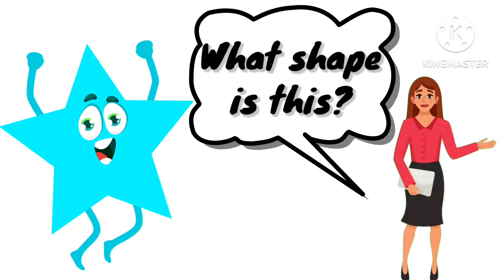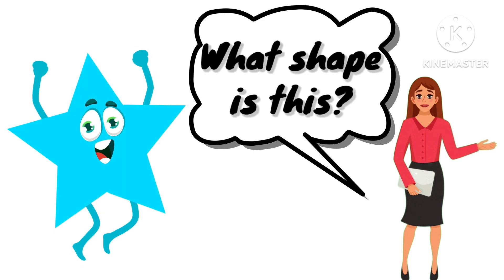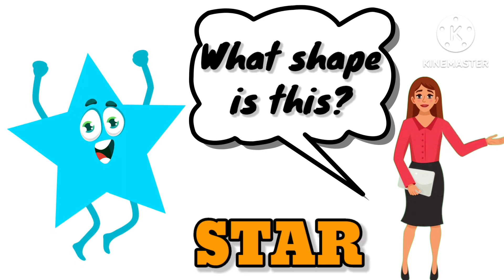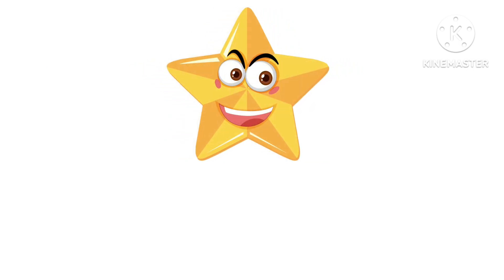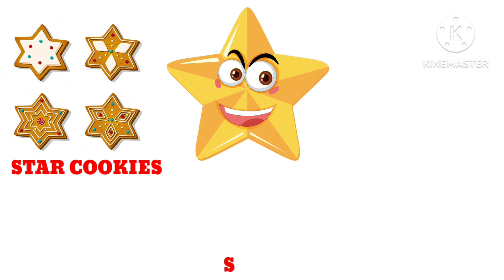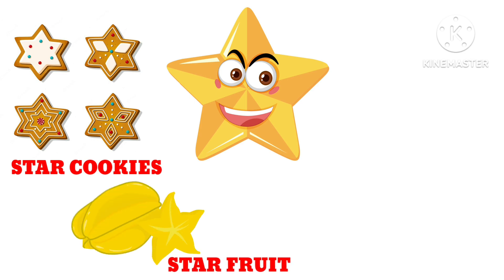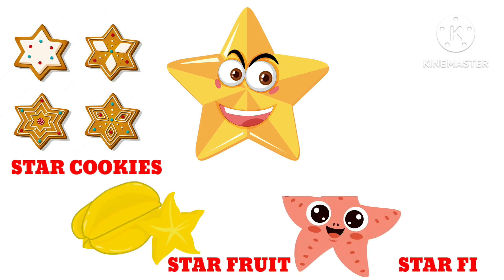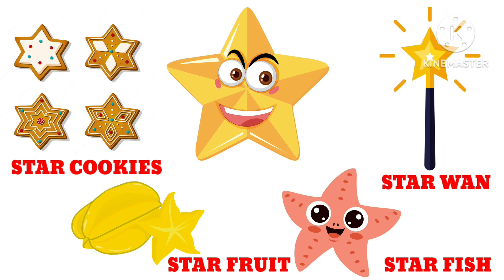What shape is this? This is a star. So kids, let's learn about the objects that are star in shape. Examples: star cookies, star fruit, starfish, and star wand are all star in shape.